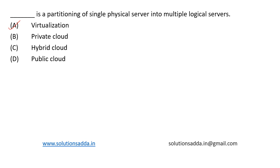Option A, virtualization, is the correct answer. In a private cloud, resources are accessible to a limited set of users across the internet or within the intranet, whereas a public cloud is accessible to the general public. Both private and public cloud are not dealing with the partitioning of a single physical server into multiple logical servers, so virtualization is the correct answer.